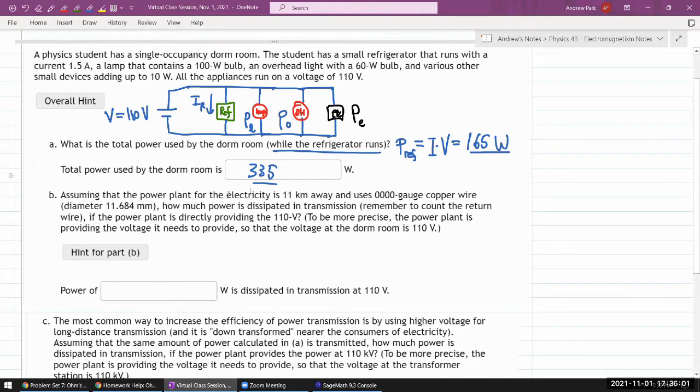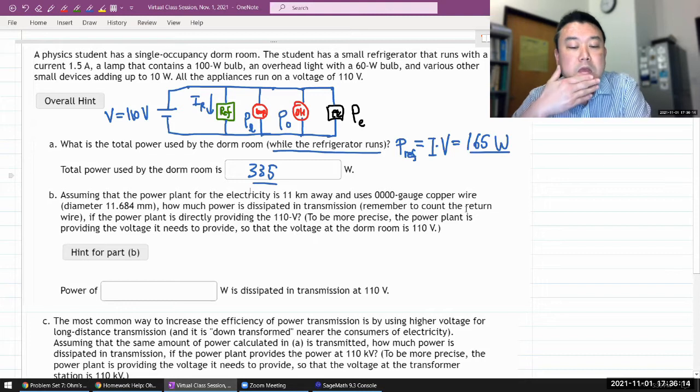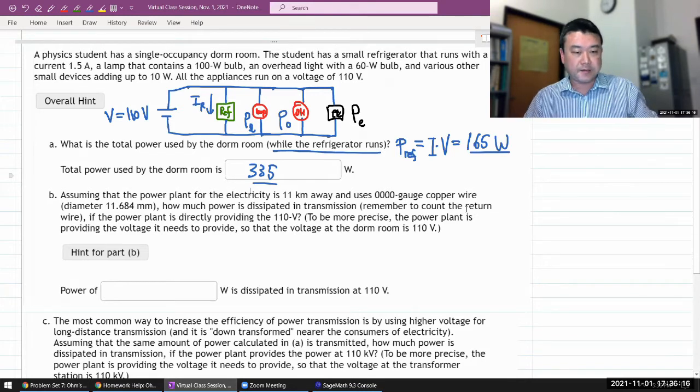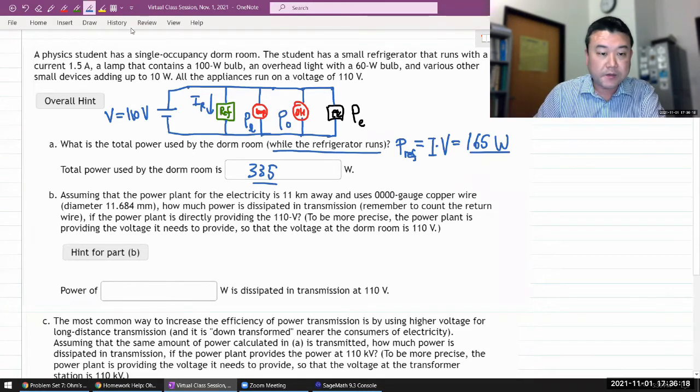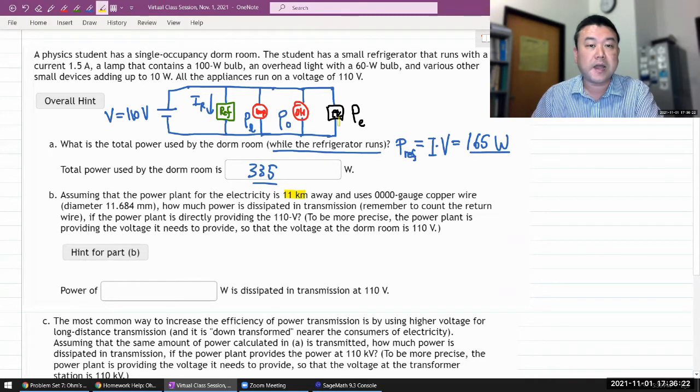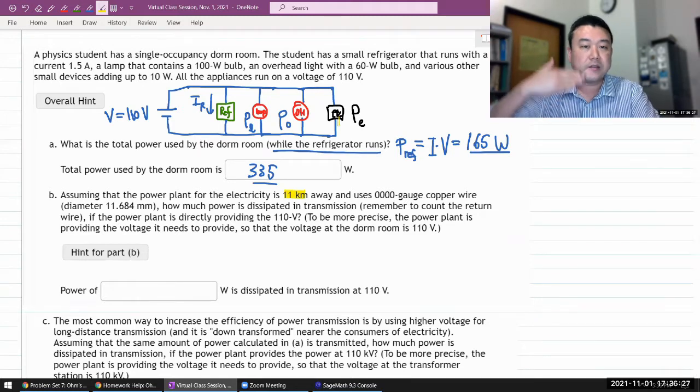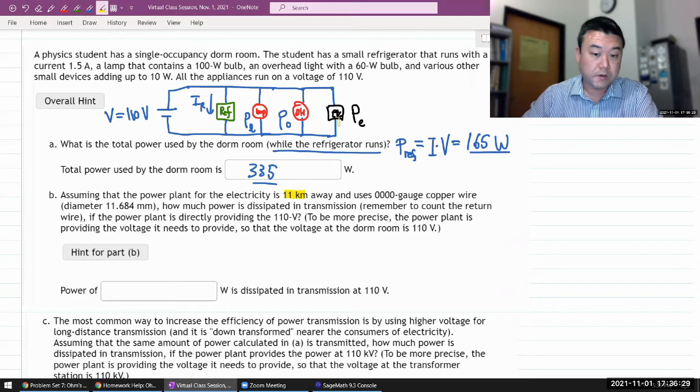So it says, assuming that the power plant for the electricity is 11 kilometers away and uses this gauge of wire that you've seen before, how much power is dissipated in transmission? Remember to count the return. Oh, so for the transmission, that distance is going to be not 11 kilometers, but 22 kilometers because there's the line that's coming. I mean, it's not going to directly come to the house, but to the house, and then there's the return portion. So we'll have to deal with double this distance.